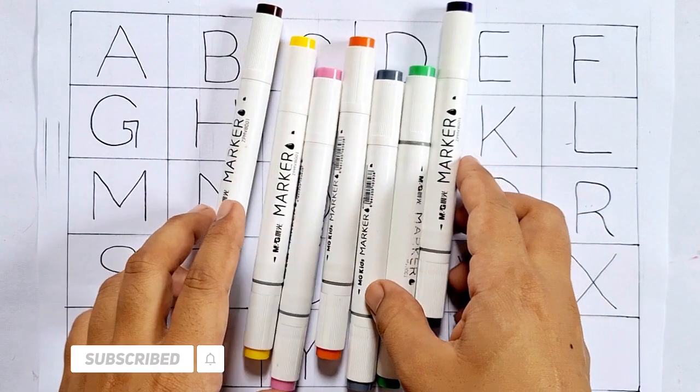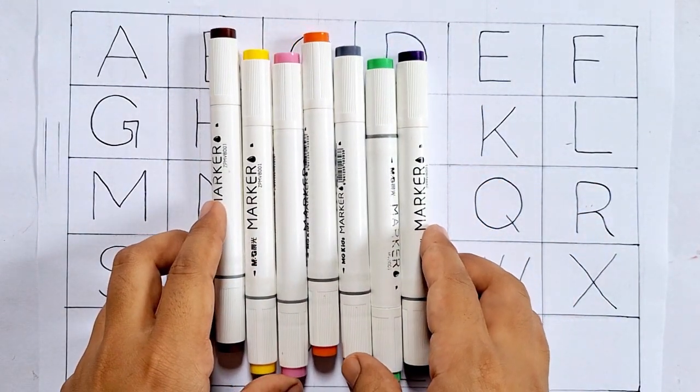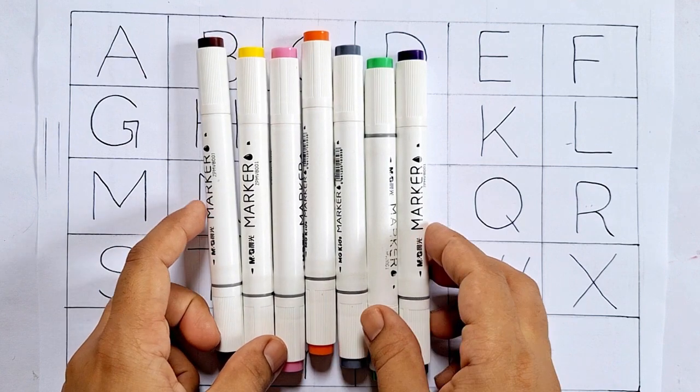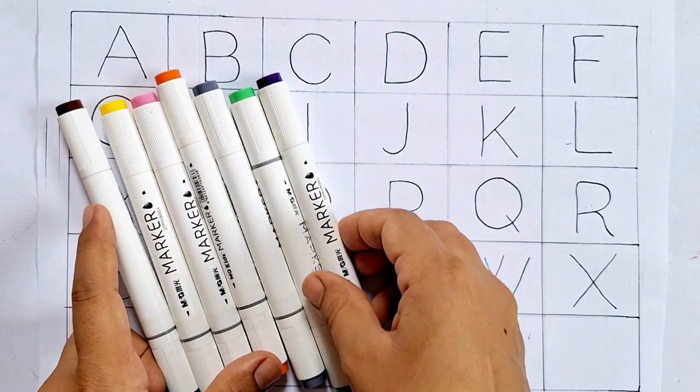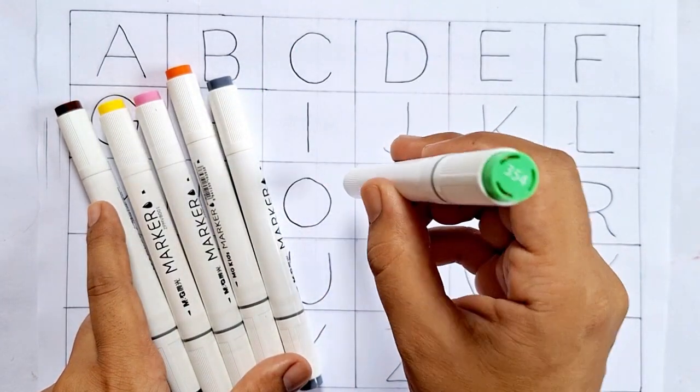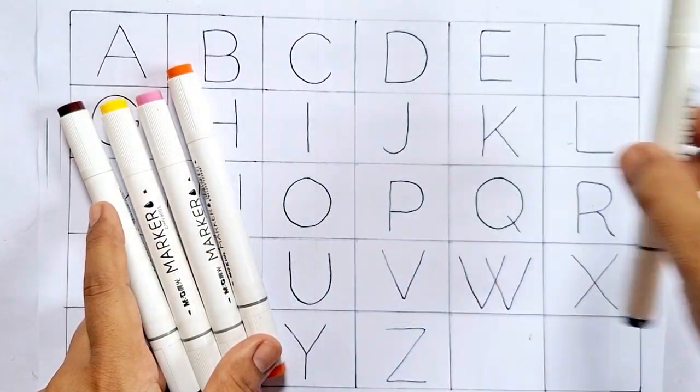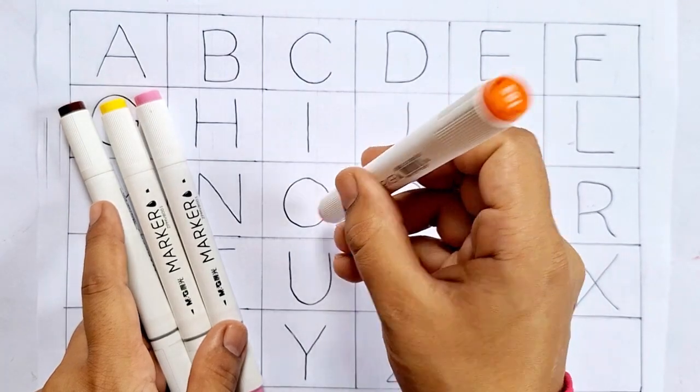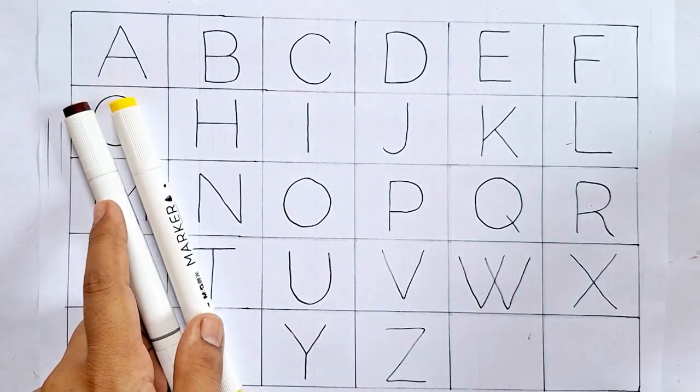Hello kids, how are you all? Today I'm going to teach you alphabets. Are you ready? Let's get started. But before we begin, let's learn some colors: purple color, light green color, gray color, orange color, baby pink color.